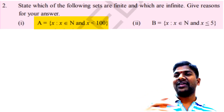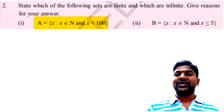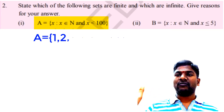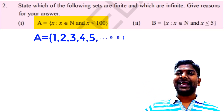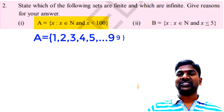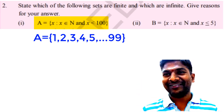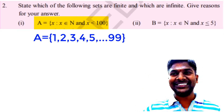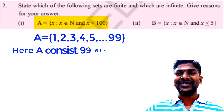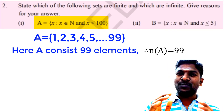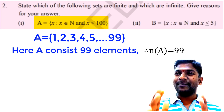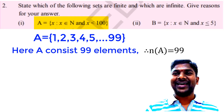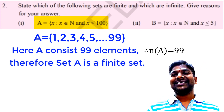So we write the elements of set A in roster form: A = {1, 2, 3, 4, 5, 6, 7, 8, 9, ..., 99}. The number of elements in set A, n(A) = 99. It is possible to count the number of elements in set A. Therefore, set A is a finite set.